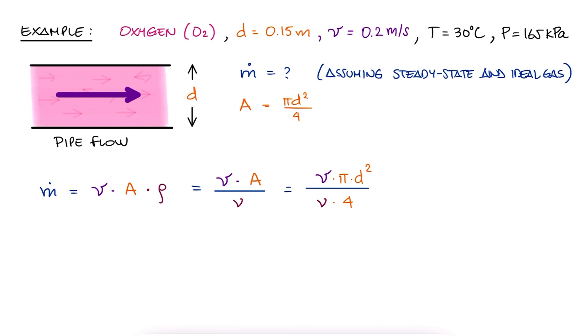And for the specific volume, we only need to use the ideal gas equation, since the problem specifically asks for that, to see that V is equal to RT over P. R is the constant specific to the gas, which would be the universal gas constant R bar over the molecular weight of O2, and this we can find by using the atomic weight of oxygen times 2, two atoms in an O2 molecule.